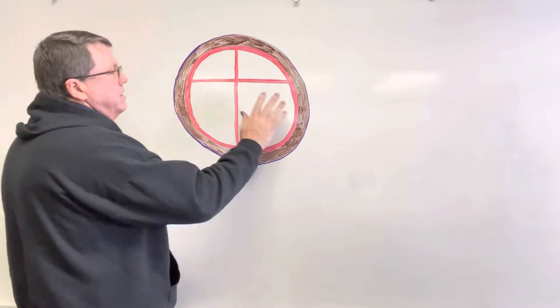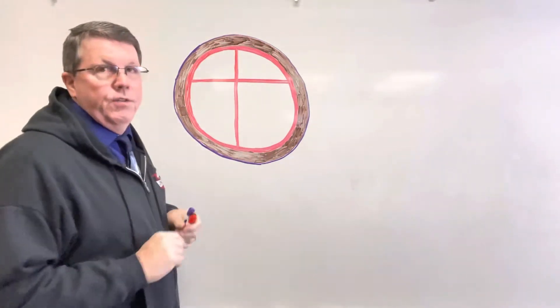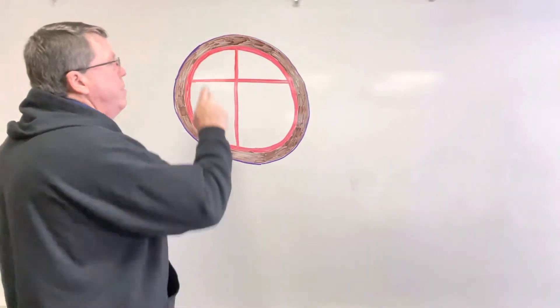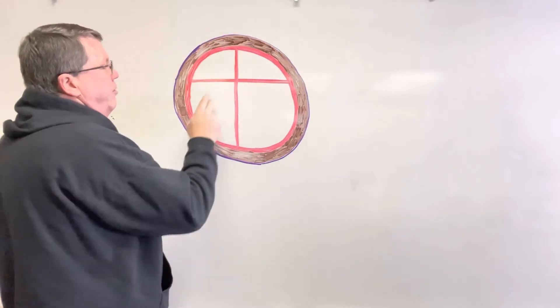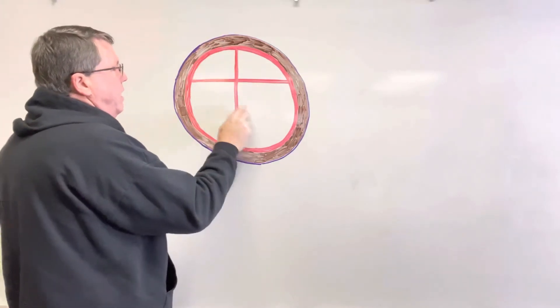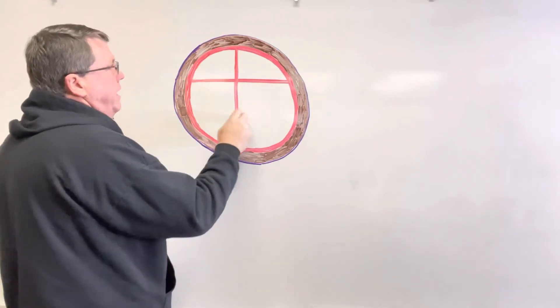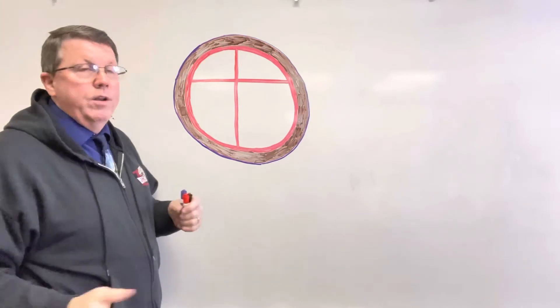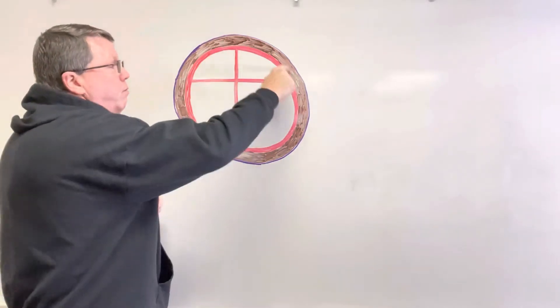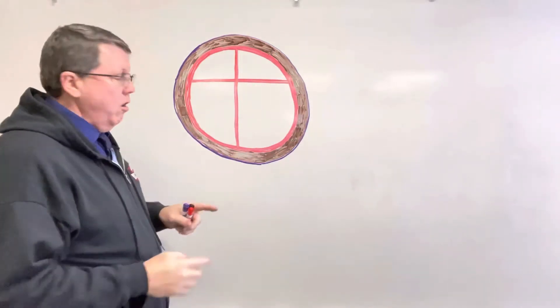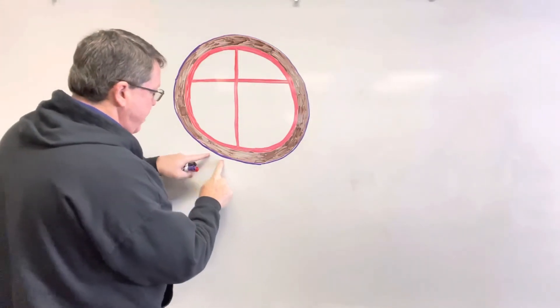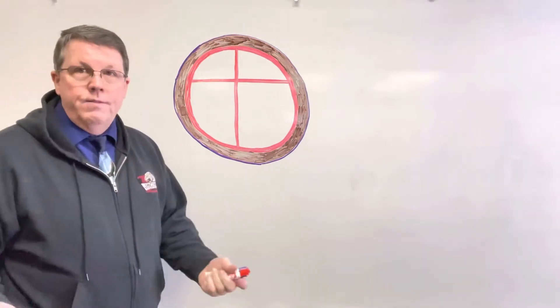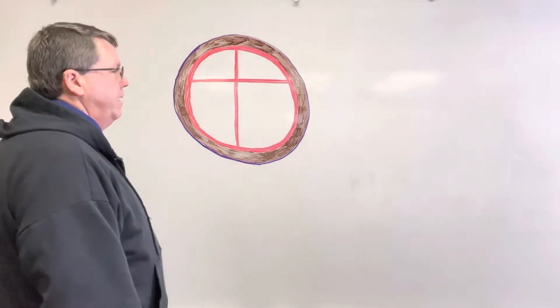This is basically a cross-section of the heart. So this would be my right atrium, left atrium, right ventricle, and left ventricle right here. The red is going to be my endocardium, the brown is going to be my myocardium, and then this really thin outer layer of purple is going to be my epicardium.